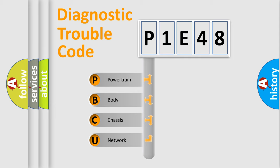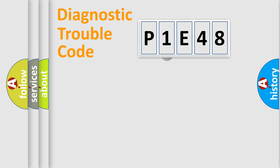We divide the electric system of automobile into four basic units: Powertrain, body, chassis, and network. This distribution is defined in the first character code.